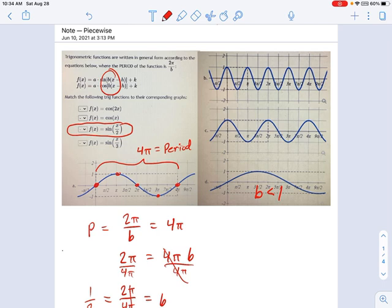But for some of these, you can see the curve is vibrating very fast. The period is small in this one, so I would expect b to be greater than 1. It's been compressed horizontally.